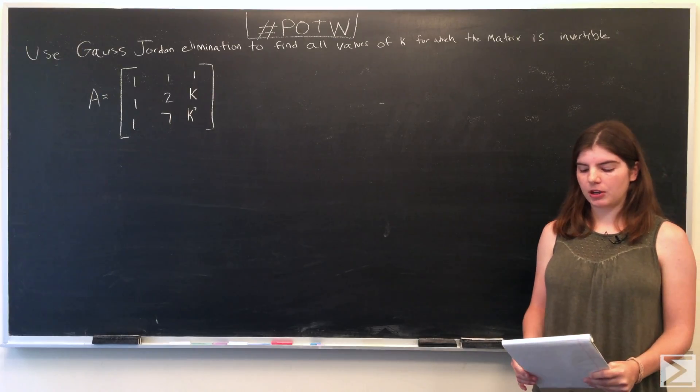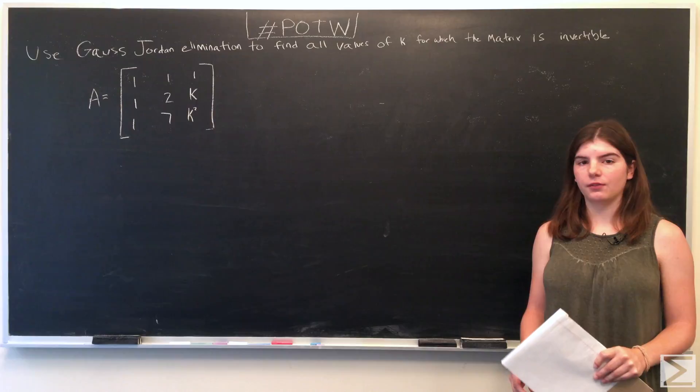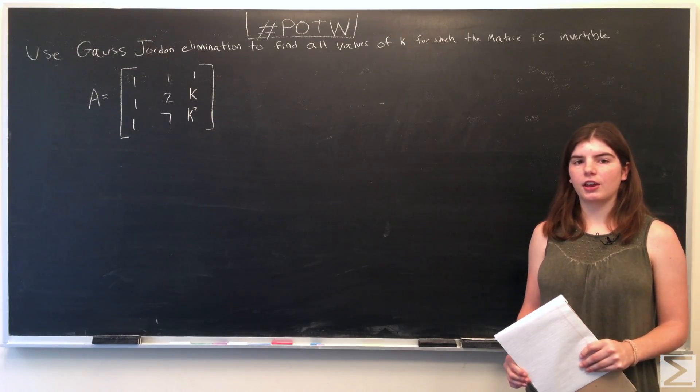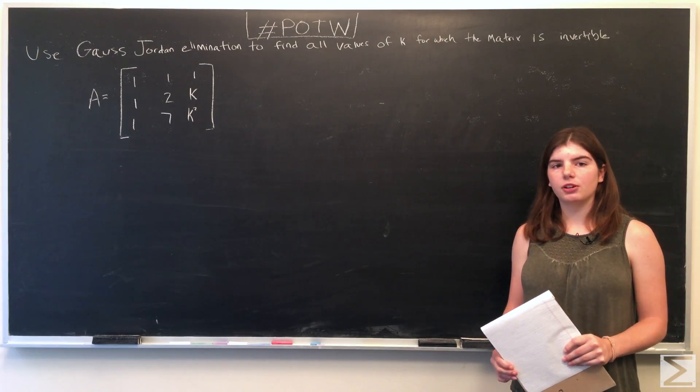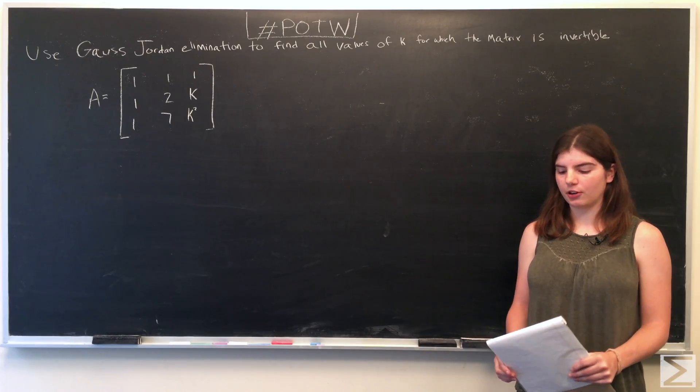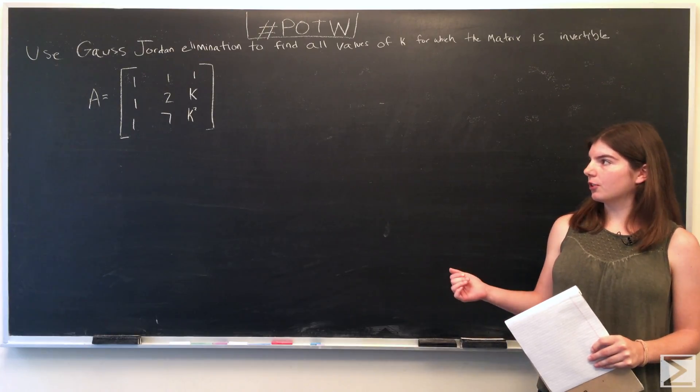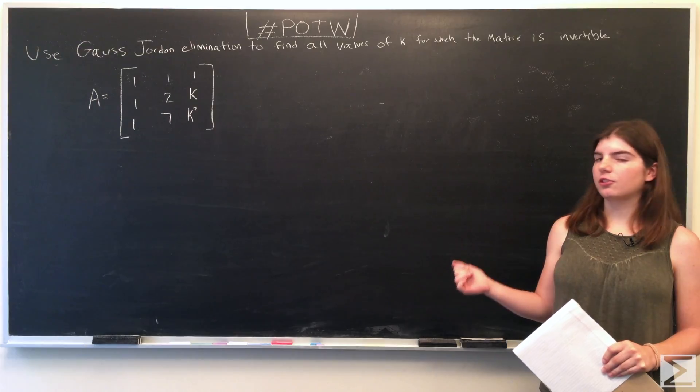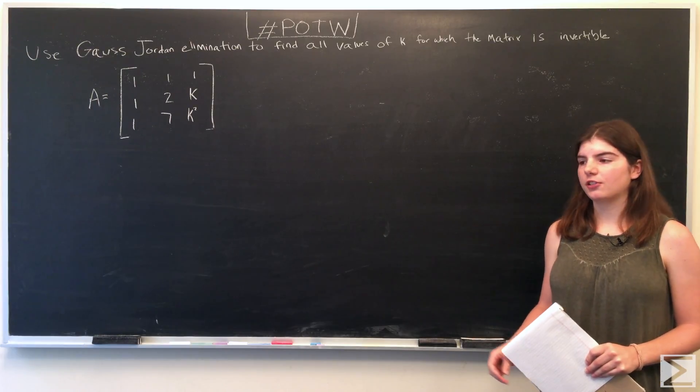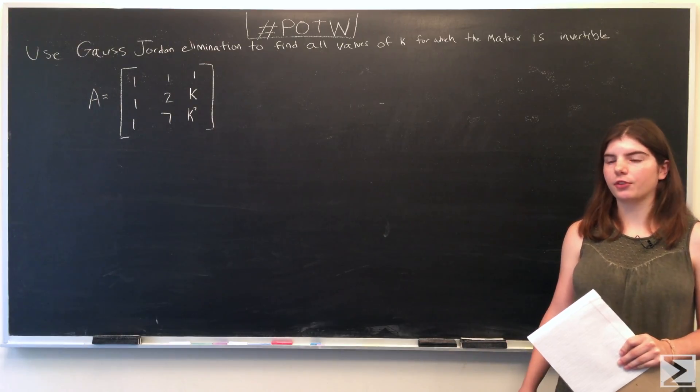A matrix is invertible if its inverse is defined, and we're going to use the fact that it's invertible if the determinant does not equal zero. So first, we need to find the determinant, so we're going to reduce matrix A into upper triangular form.